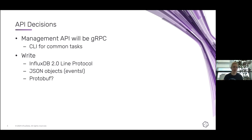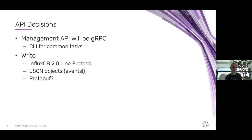For writing data into IOx, we'll have InfluxDB 2.0 line protocol, which we currently support. We also want to add support for posting flat JSON objects to the database — events — and we've also been thinking about protobufs, as somebody brought this up last month. The set of data types we want IOx to support is broader than what line protocol supports, and we'd rather piggyback off something like protobufs that gives people strong typing.